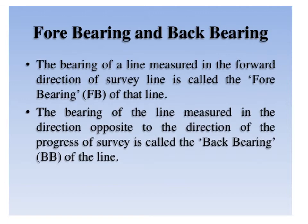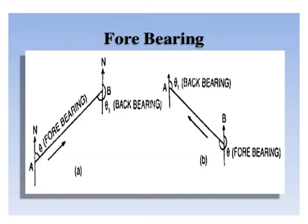In this slide, we are going to see forward bearing and back bearing. The bearing of a line measured in the forward direction of the survey line is called the forward bearing. The bearing measured in the direction opposite to the direction of progress of survey is called the back bearing. Here we consider line AB where the direction of progress is from A to B. The angle of line AB with respect to magnetic north is the forward bearing. When the instrument is set at B and the angle of line BA is measured clockwise, that gives the back bearing of line AB.